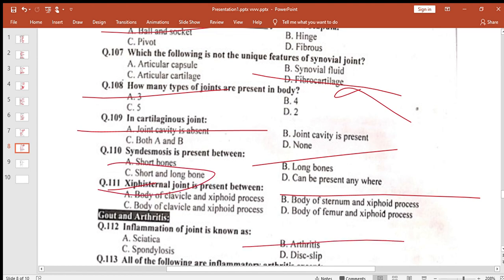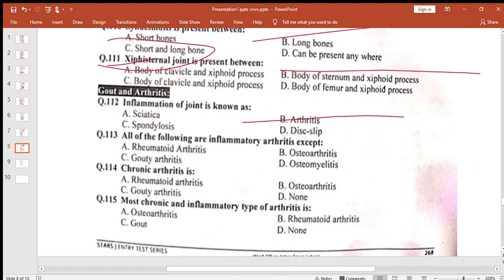Inflammation of the joint: arthritis. All of the following are inflammatory arthritis except gouty arthritis, chronic arthritis, rheumatoid arthritis which is autoimmune. Most chronic and inflammatory type of arthritis: so osteoarthritis is inflammatory type.